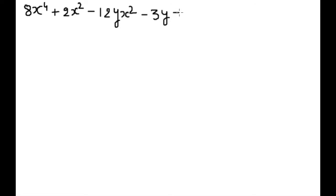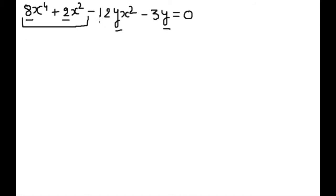This is equal to 0. At first sight we can see 2 is common in the first two terms and y is common in the last two terms, so we will make those into two groups. First, we will split 8 — we can write 8 as 2 into 4, and x to the power 4 as x squared into x squared.